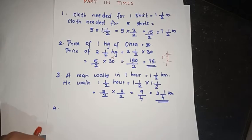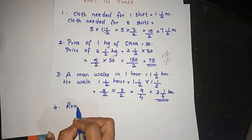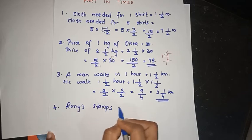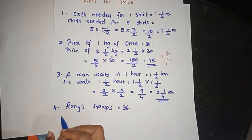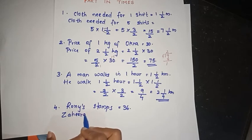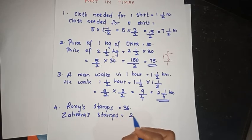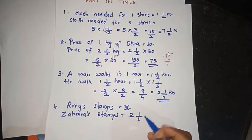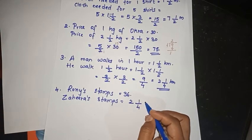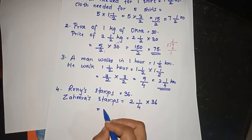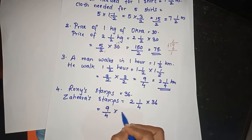Roni has 36 stamps. Sahira has 2 and 1 by 4 times as much. How many stamps does she have? Sahira's stamps equal 2 and 1 by 4 into 36, which is 9 by 4 into 36.